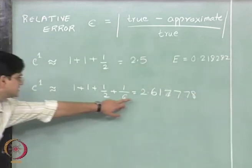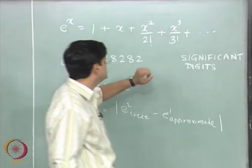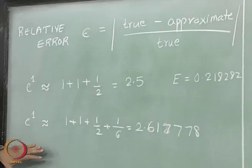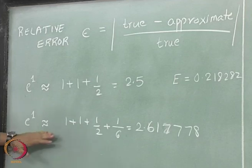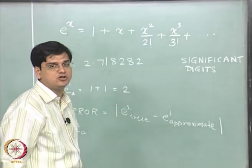Now this value is getting closer to the value 2.71828. What we see over here is, as we include additional terms in this infinite series expansion, we are getting closer and closer to the true value of e to the power 1.